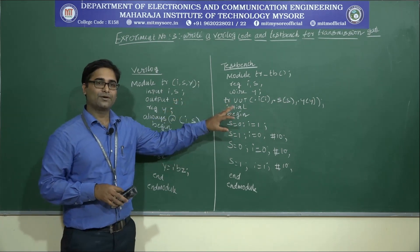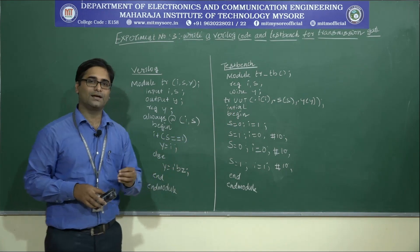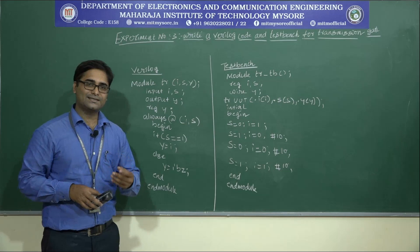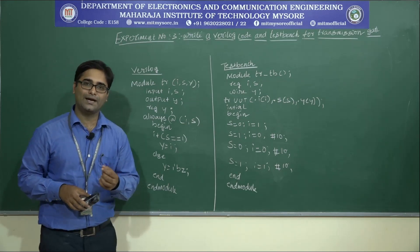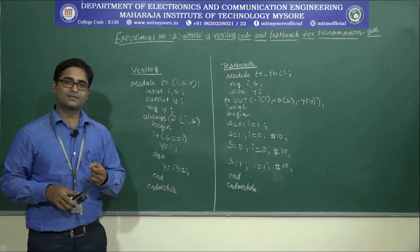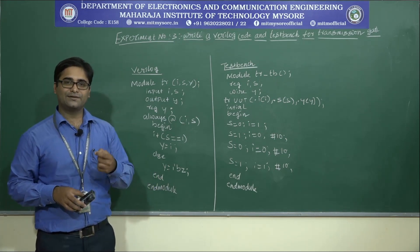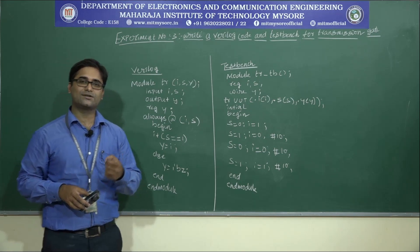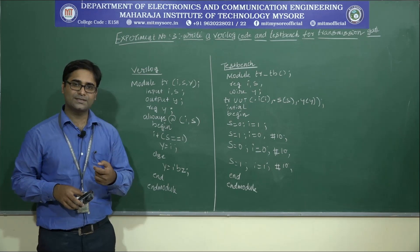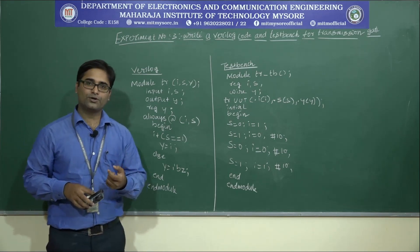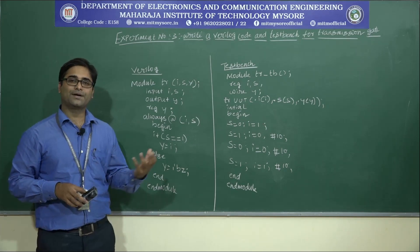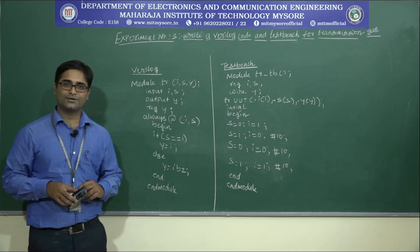This is the Verilog code and test bench for the particular transmission gate. In summary, the pMOS pass transistor conducts good 1 and weak 0, and the nMOS conducts good 0 and weak 1. There is a deficiency with both pass transistors, and to overcome this deficiency we use the combination of both pMOS and nMOS, which is called a transmission gate. Thank you.